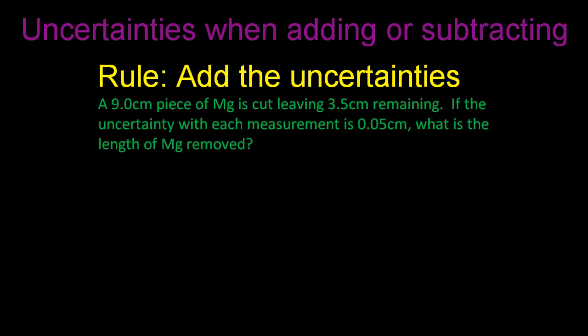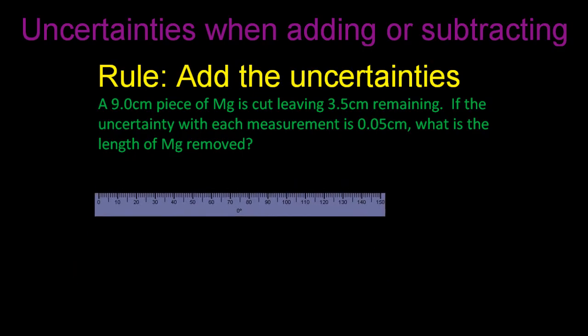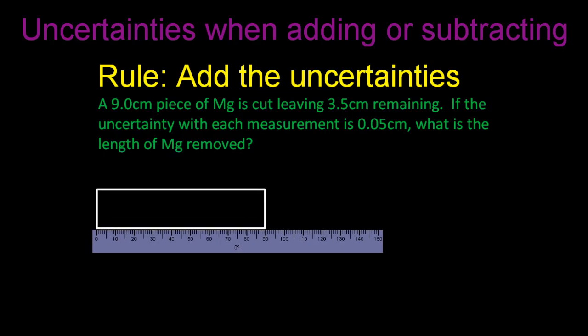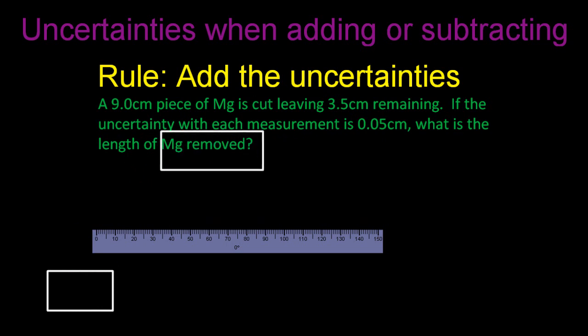If I've got a 9cm piece of magnesium, and I cut it leaving 3.5cm remaining, the uncertainty is 0.05cm, so what's the length of the magnesium that I've actually removed? So there's the ruler, there's the magnesium. Now you might think that's 9cm of magnesium, but actually it could be 9.05cm or 8.95cm. There is an uncertainty at that end of the ruler. Actually, there's an uncertainty at both ends, but we just assume that 0 is exactly 0.